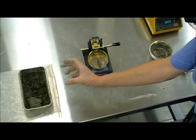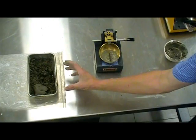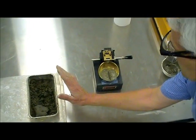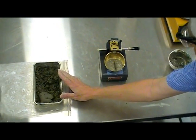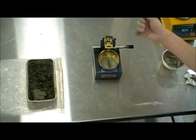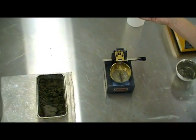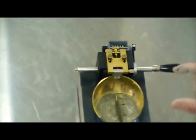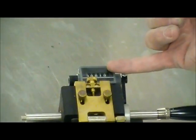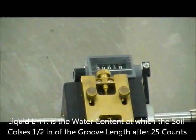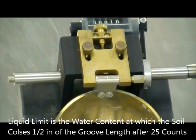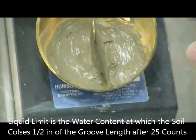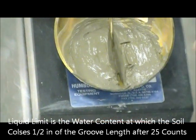We have prepared a set of samples of different water contents. So if the material was in a drier stage and we did the same procedure, instead of taking ten counts, we would have taken more. The goal is to identify the water content for which it takes exactly twenty-five counts to close a gap by half an inch.